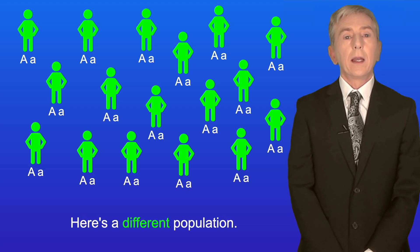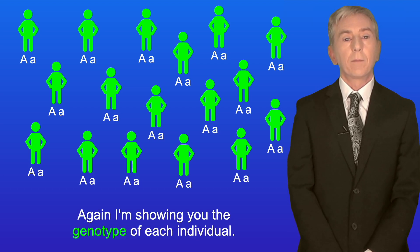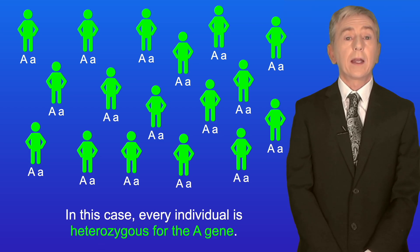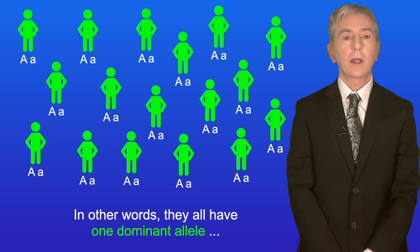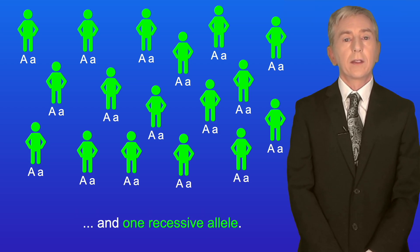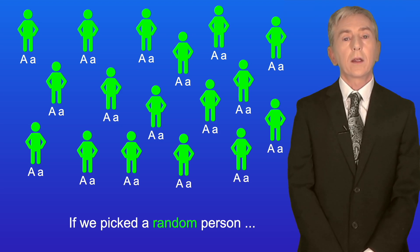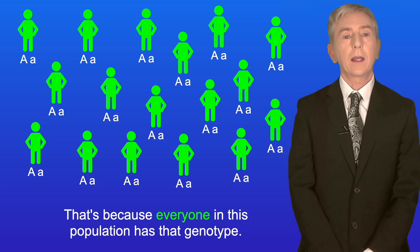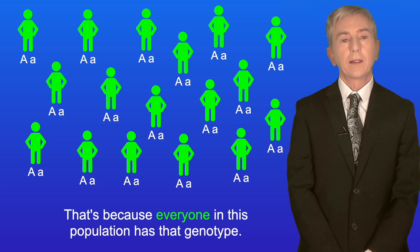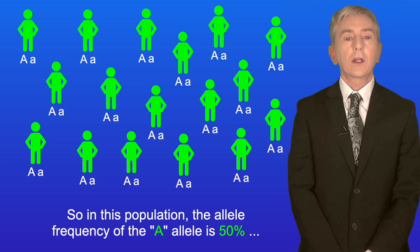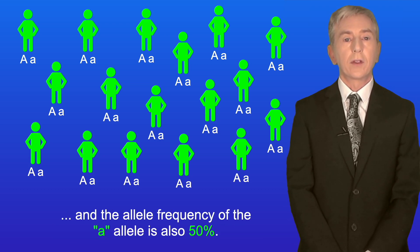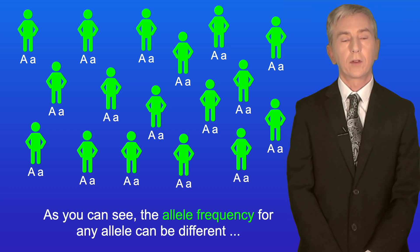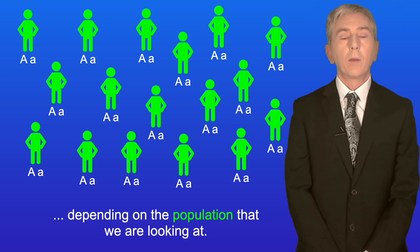Here's a different population, and again I'm showing you the genotype of each individual. In this case every individual is heterozygous for the A gene — in other words they all have one dominant allele and one recessive allele. If we picked a random person, the probability that they have the capital A lowercase a genotype is 1.0, because everyone in this population has that genotype. So in this population the allele frequency of the capital A allele is 50% and the allele frequency of the lowercase a allele is also 50%. As you can see, the allele frequency for any allele can be different depending on the population that we're looking at.